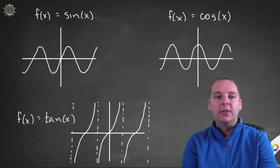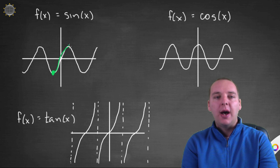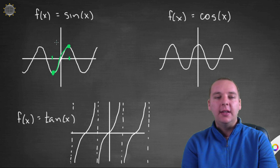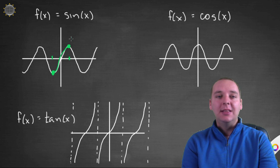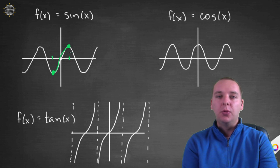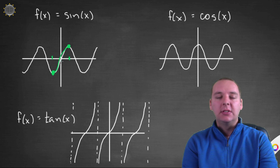We're already familiar with this idea for the sine function. We're going to restrict it from -π/2 to π/2 and only look at that portion. If you look at just the green line here, you'll notice it passes the vertical line test as well as the horizontal line test, which means just this part is invertible. We'll unpack what this inverse function looks like in just a second.